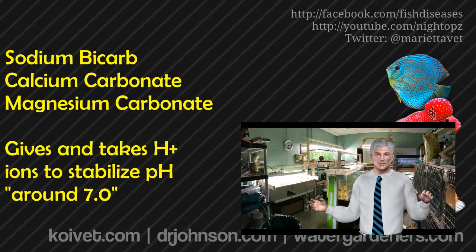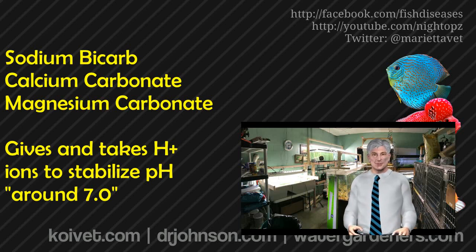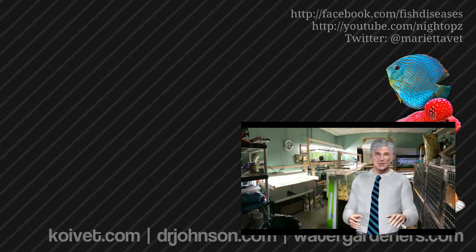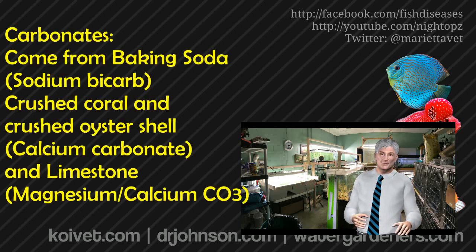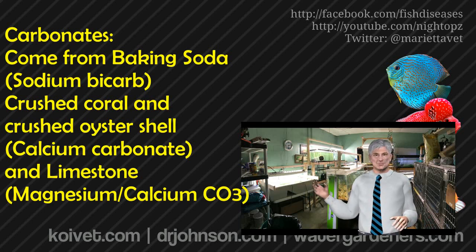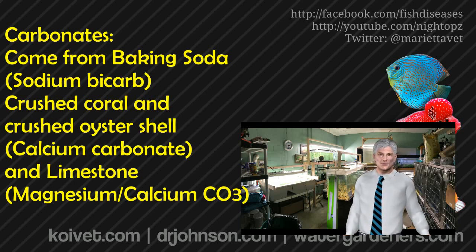Carbonates are like the Federal Reserve System — they're what backs up and supports your pH. Without carbonates, your pH could be all over the place because there would be no exchange system to neutralize what the pH is trying to do. Carbonates come from compounds like baking soda, which is sodium bicarbonate; crushed oyster shell, which is calcium carbonate; and limestone such as dolomitic limestone, which provides magnesium and calcium carbonate. There are lots of different places to find carbonates.